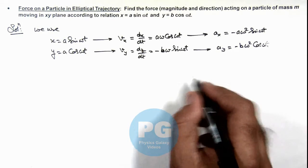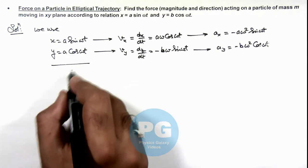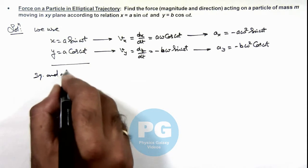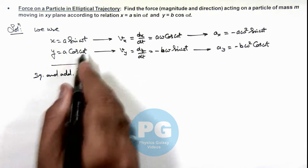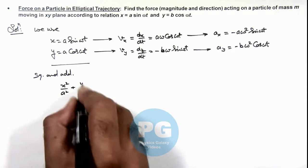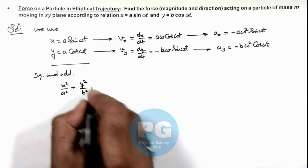So from this relation here we can see, if we square and add, then this can be given as x square by a square plus y square by b square is equal to 1.